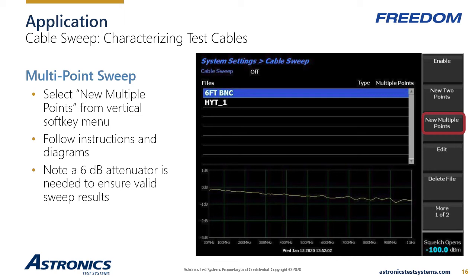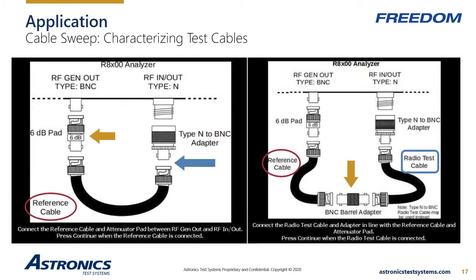The instrument will sweep from 30 MHz to 1 GHz and capture the cable loss data. This is a two-step process and requires several RF components in addition to the test cable. First, a 6 dB pad or attenuator is attached to the RFGEN out port to minimize the impact of impedance mismatches across the full spectrum. Next, a reference cable is connected from the pad to the RFIN port. An RF adapter may be needed to make this connection, at which point the instrument will sweep the reference cable to characterize the RF path. The second step requires the user to insert the cable under test between the reference cable and the RFIN port. Another RF adapter may be needed, and having a reference cable that connects directly to the cable under test will slightly improve sweep accuracy.